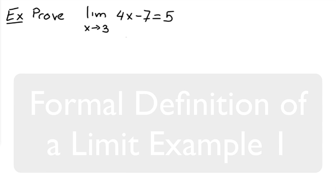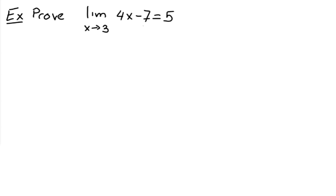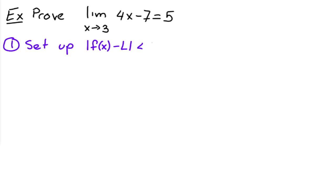We want to prove this first limit rigorously. I'm going to give you a series of steps to follow — you can vary them, but the most important thing is that every step follows logically from the one before it. The first thing you should do is set up what you know: f(x) minus L is less than epsilon, and x minus c is less than delta.